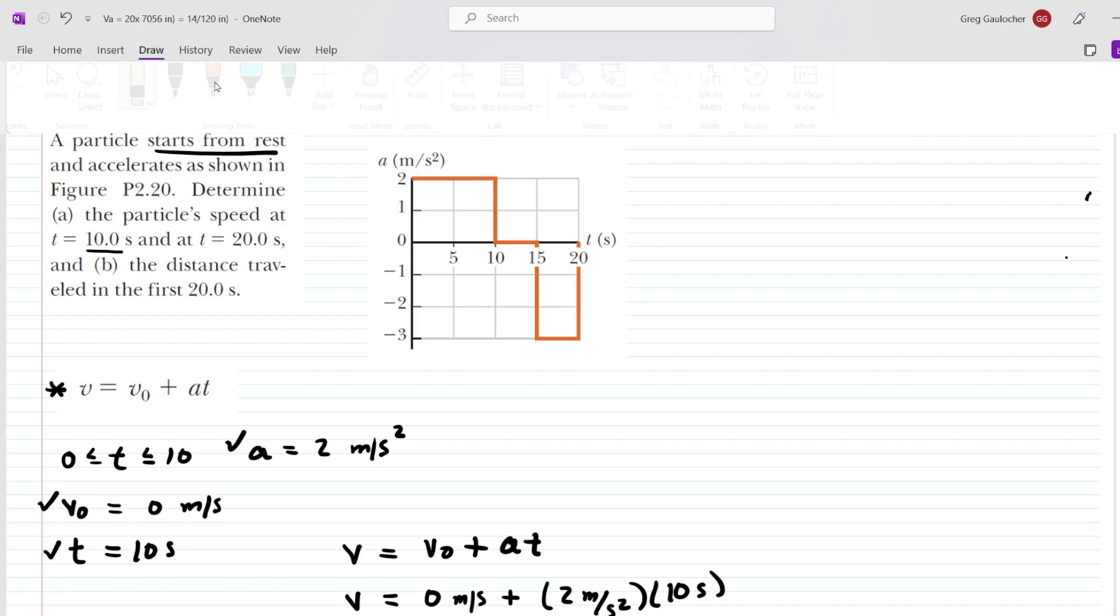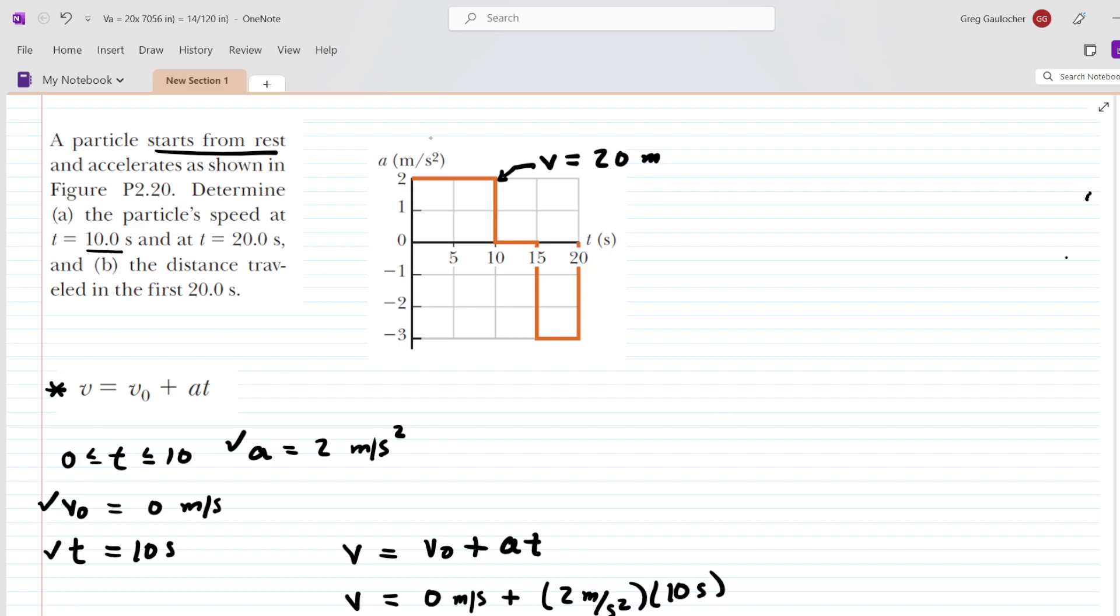We can go on to the diagram and just make an annotation of that fact. So at this point right here, we know that the velocity of the particle is equal to 20 meters per second. But we're not done because we also have to figure out how fast the particle is moving at a time of 20 seconds. Before we can do that, it's important to look at the interval from 10 to 15.